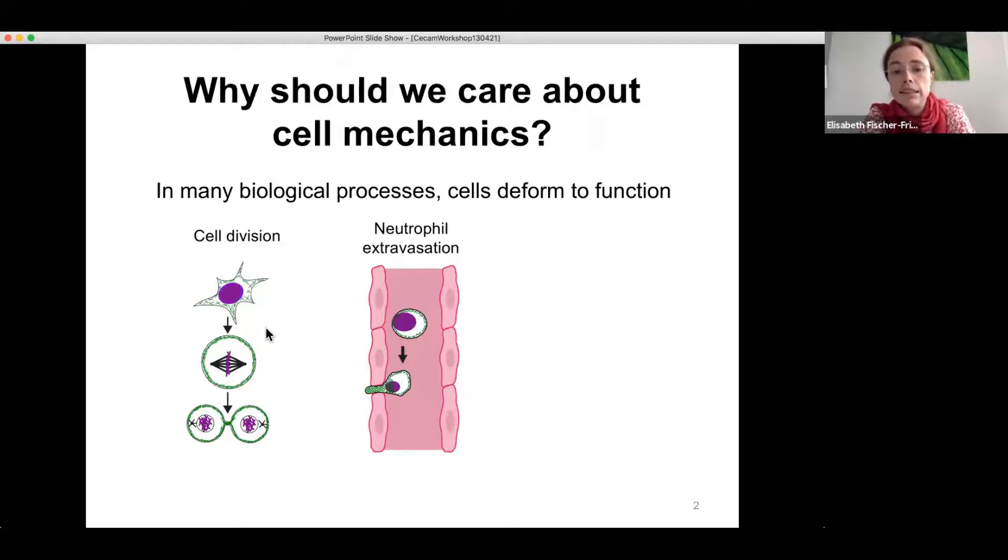And another example is cell migration. For instance, here the migration of a white blood cell that squeezes through the wall of a blood vessel to enter surrounding inflamed tissue. So this is called extravasation, this process, and clearly also here the cell needs to change shape and squeeze through this pore.